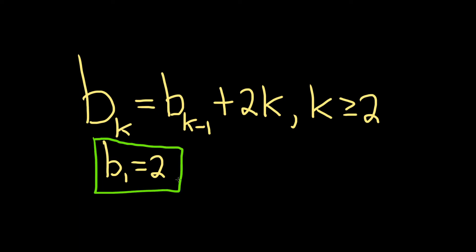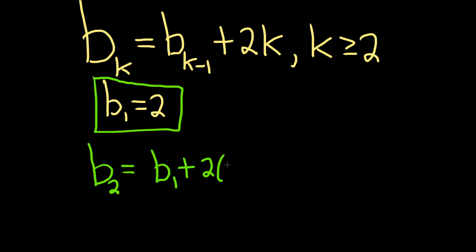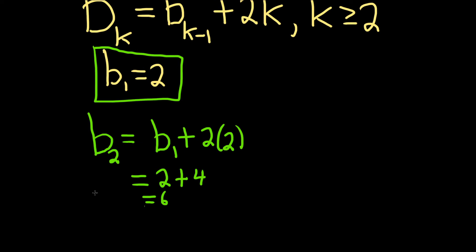To find the second term, we're going to use this formula. Notice the formula starts when k is greater than or equal to 2, so we're allowed to plug in 2. Putting a 2 where all the k's are will give us b sub 2, and that's equal to b sub 1 plus 2 times 2. Since b sub 1 is 2, this is 2 plus 4, which equals 6. So b sub 2 is equal to 6.